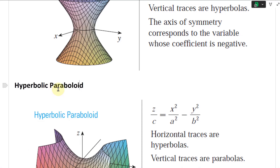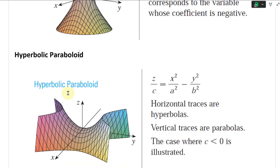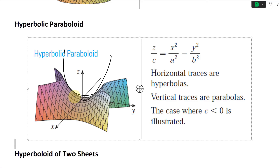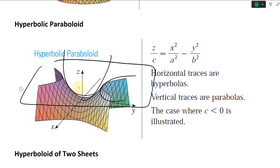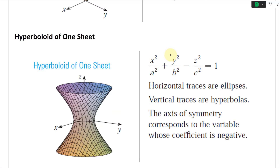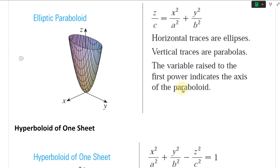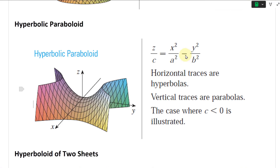So the hyperbolic paraboloid — this one is an interesting one. It looks like a parabola in one direction, but on the horizontal side you actually get hyperbolas. This is similar to the elliptic paraboloid in that one variable has a power of one, but instead of a plus sign between the squared terms, we have a negative sign.